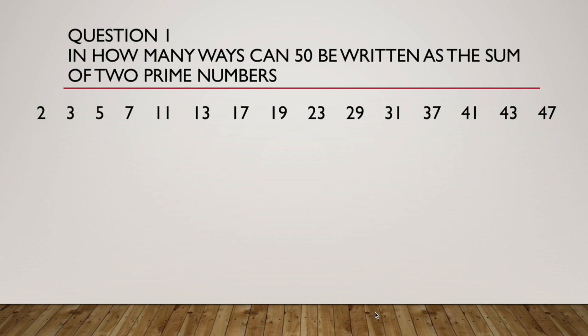Now we're basically looking at how many ways we can pair these numbers up. So if we start two, well two can't pair with 48 because 48 is not a prime number because it's even. Two is the only even prime number.